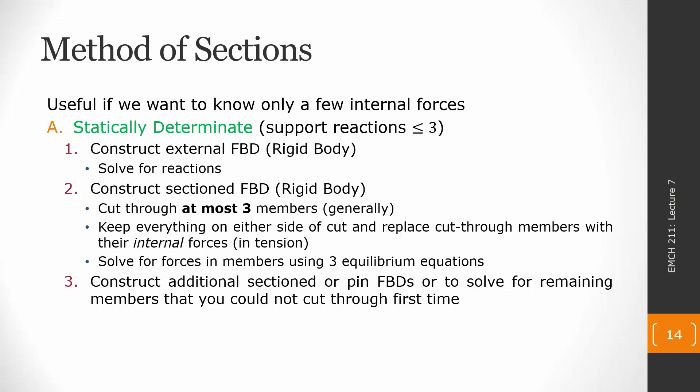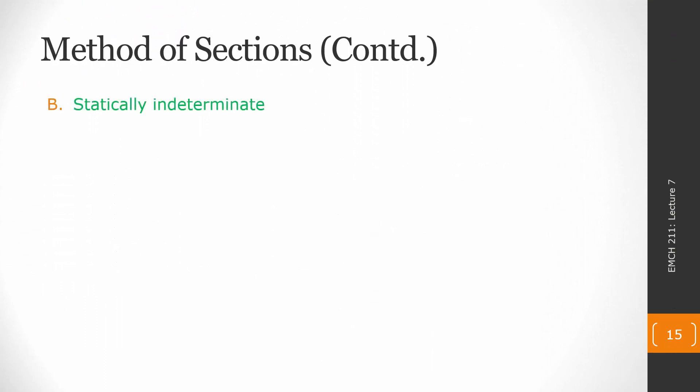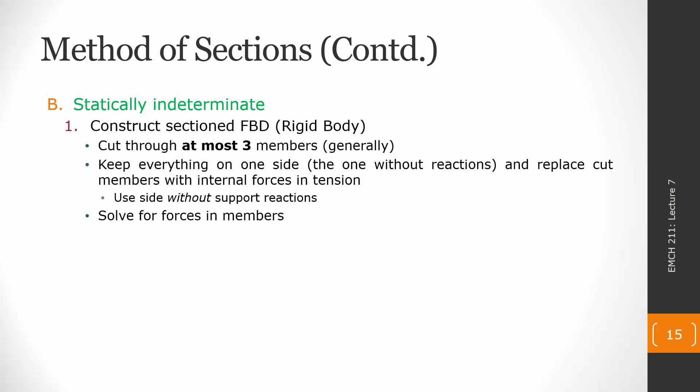The second scenario is when we have a statically indeterminate structure. As with method of joints for indeterminate structures, I recommend skipping the external free body diagram since we won't get enough equations for all unknowns, and instead jumping right into solving for internal forces. With method of sections, I recommend making a section cut as the first move. If we can take the portion of the section that does not include any supports, that makes a good first free body diagram, limiting unknowns to three and avoiding the unsolved support reactions.